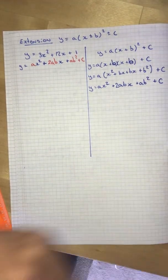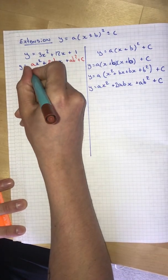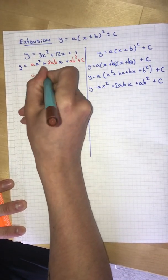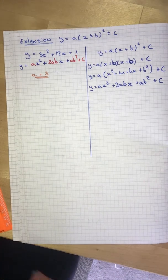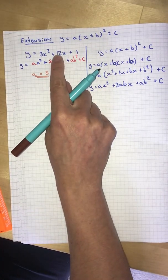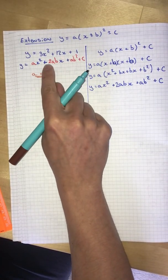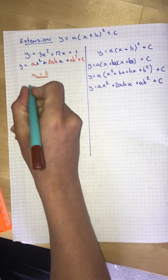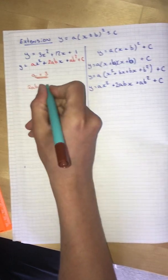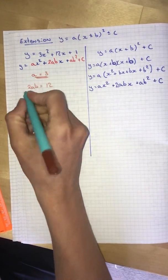So we can see that the coefficient of the x squared is 3 and the coefficient of the x squared is a. So that therefore means a equals 3. The coefficient of the x is 12 and the coefficient of the x is 2ab. So I can write 2ab equals 12. We know that a is 3.